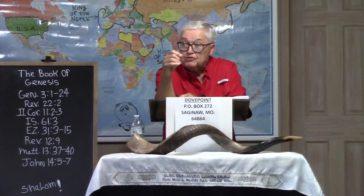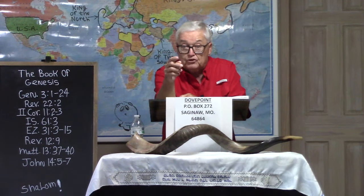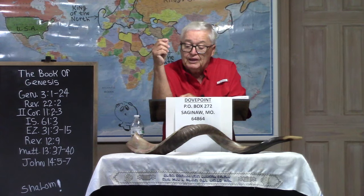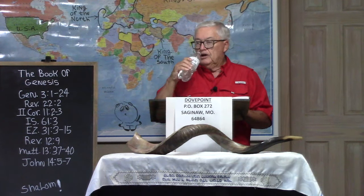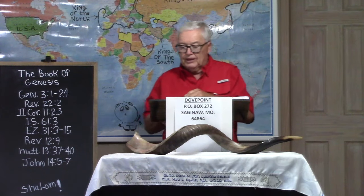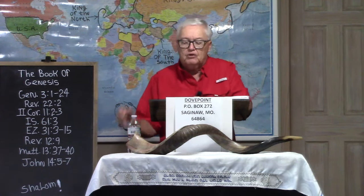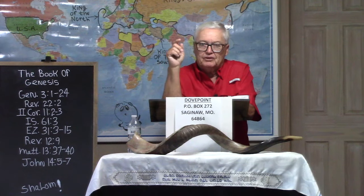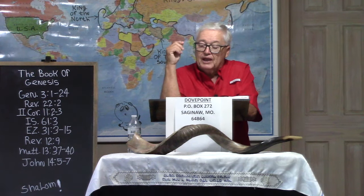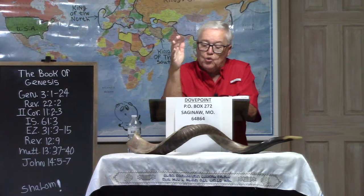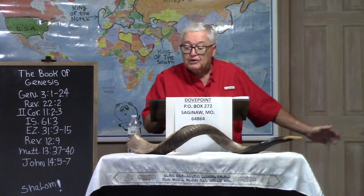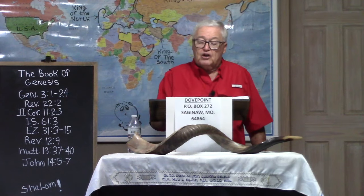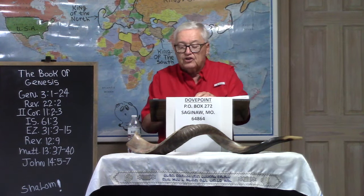Now back to Genesis chapter 3, picking it back up in verse 16. Genesis 3:16: 'And God said unto the woman, I will greatly multiply thy sorrow and thy conception.' Conception in the Hebrew language is heron, and it means pregnancy. This is exactly what we're talking about all the way through here — to be with child. 'In sorrow shalt thou bring forth children and thy desire shall be to thy husband and he shall rule over you.'